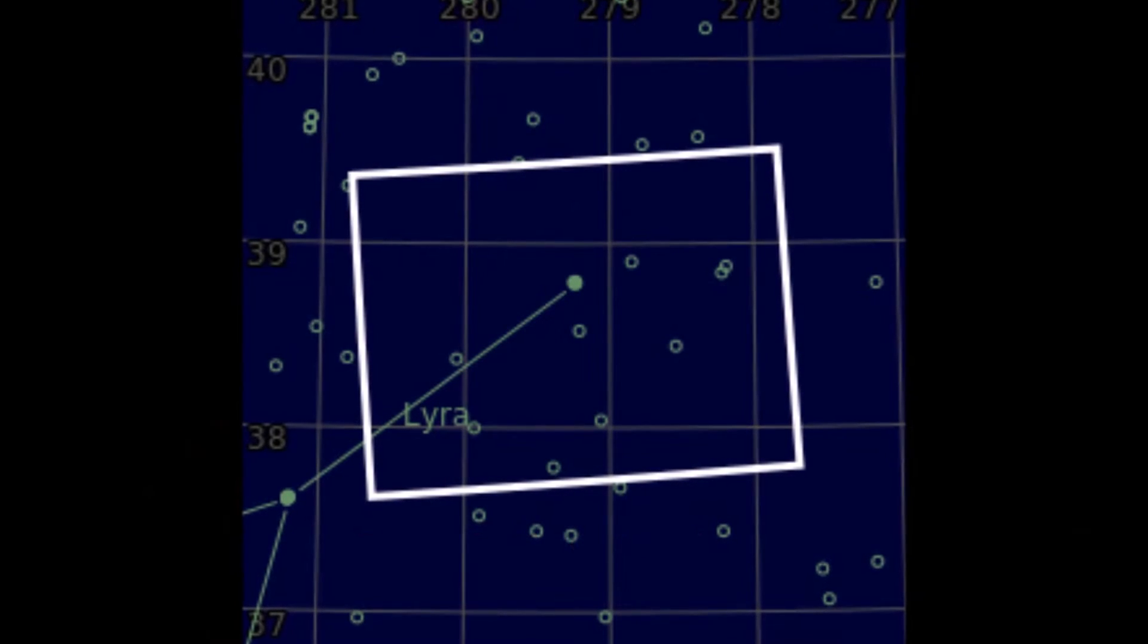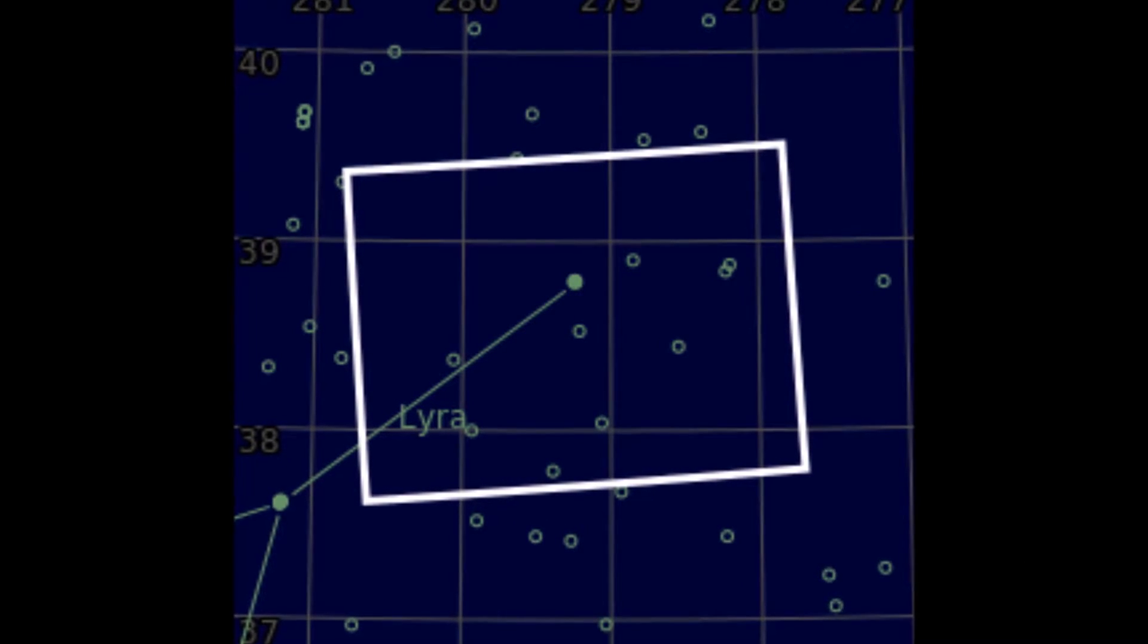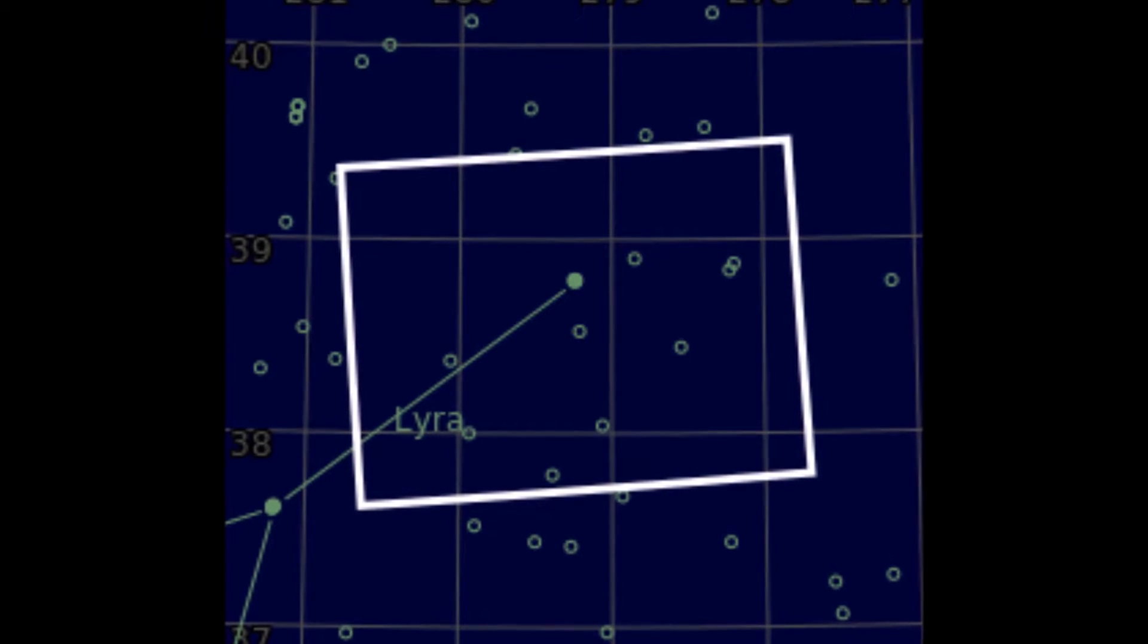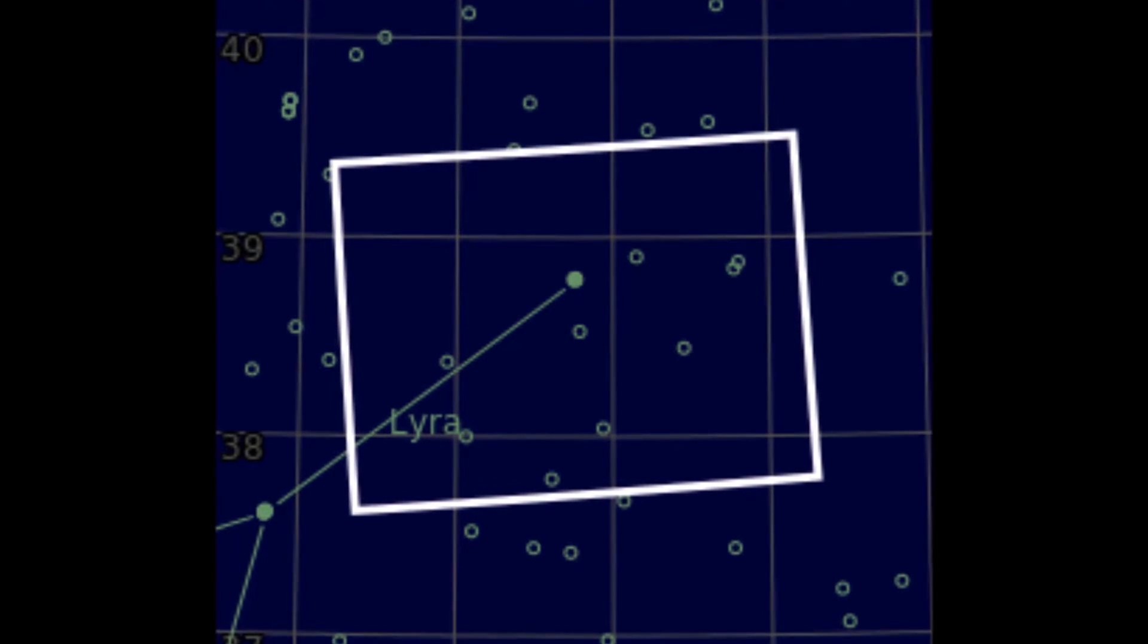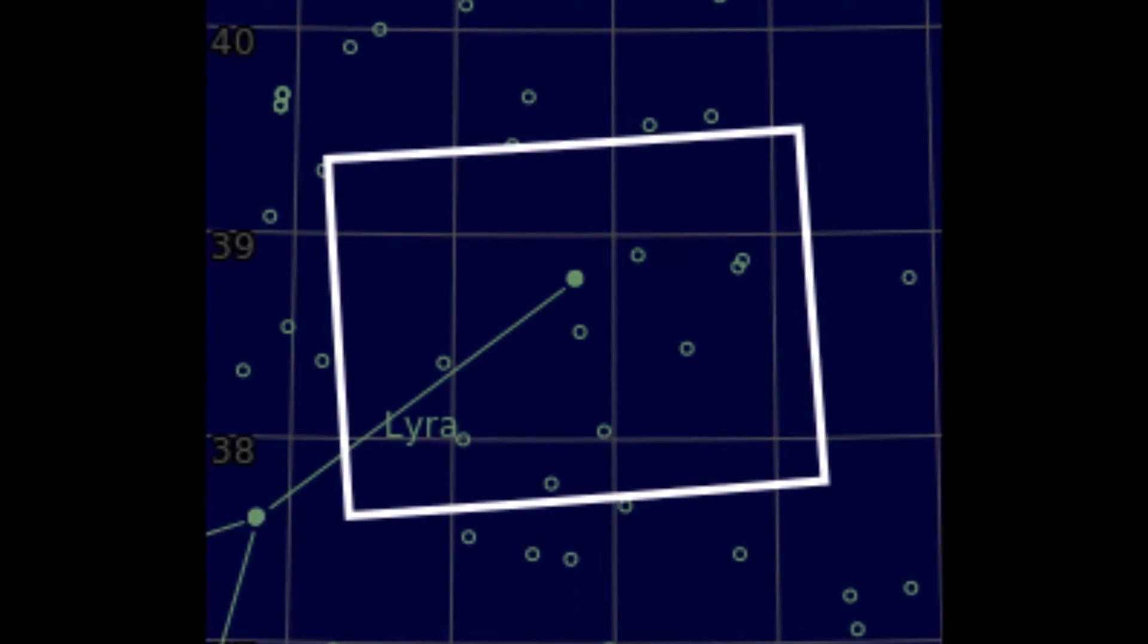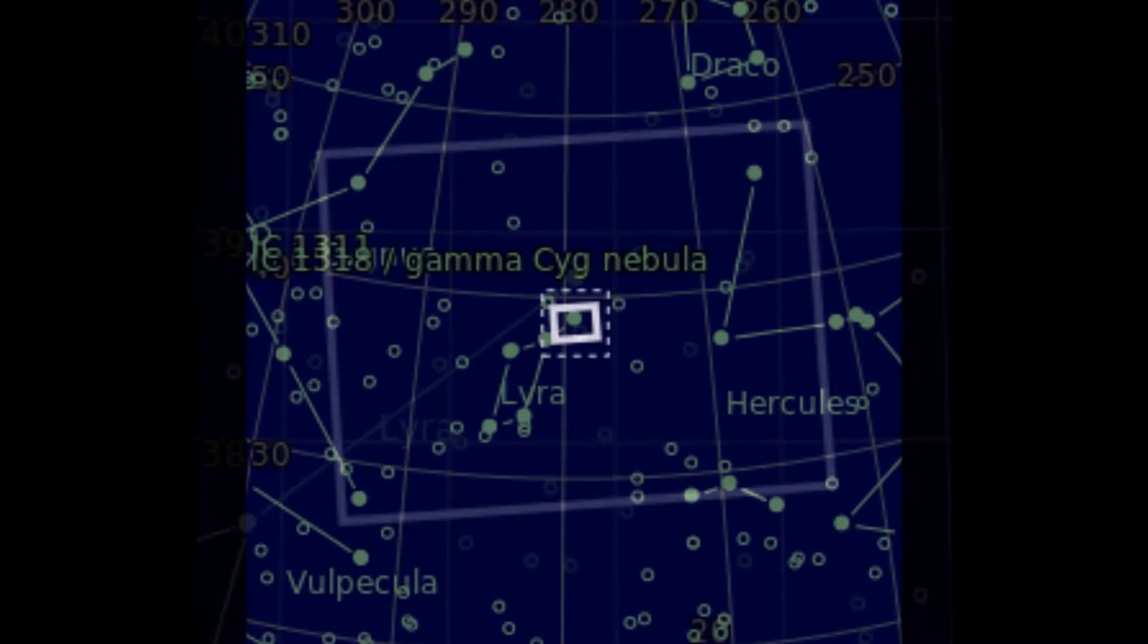The constellation of Lyra was often represented on star maps as a vulture or an eagle carrying a lyre, and hence sometimes referred to as Aquila Cadens or Vulture Cadens.